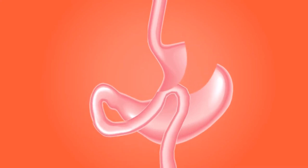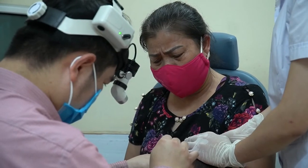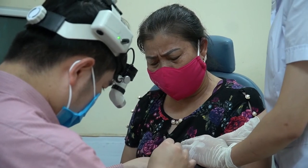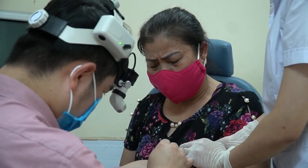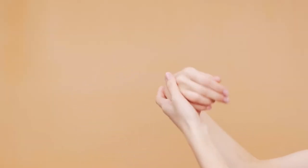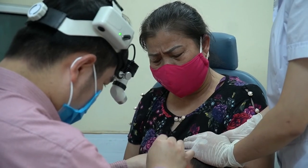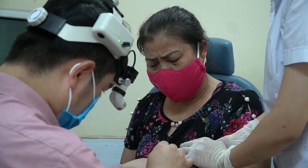Now, endoparasites are found within the body of the host. All protozoans and helminths are endoparasites, and when they cause a disease condition in their host, they are said to cause an infection. You can sing it like a song: ectoparasites cause infestation, endoparasites cause infection in their hosts.